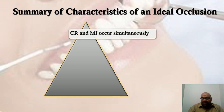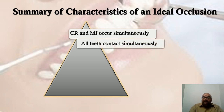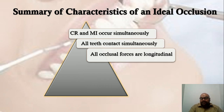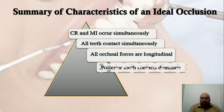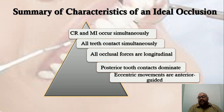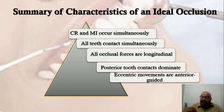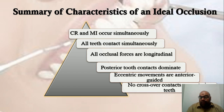Summarizing the characteristics of an ideal occlusion: centric relation and centric occlusion occur simultaneously; all teeth are in maximum contact with forces directed longitudinally; posterior teeth dominate with cusp-to-fossa relationships; anterior teeth are passively in contact; eccentric movements — protrusion guided by anterior teeth; lateral movements guided by canine or group function; and there should be no crossover contacts on the anterior teeth.